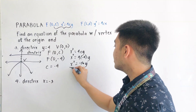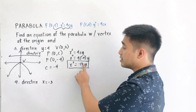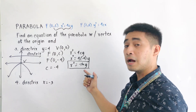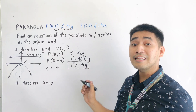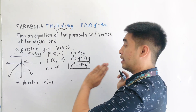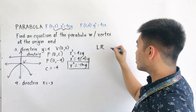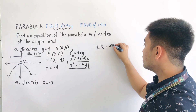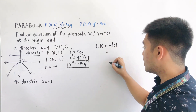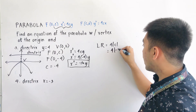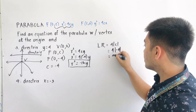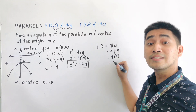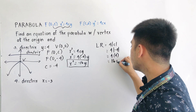Therefore, this is now the equation of the parabola. Since this is negative, it is opening downward. Always remember that if your parabola equation is negative, it either opens downward or it opens to the left. So what is the length of the latus rectum? The length of the latus rectum is 4 times the absolute value of c, which is 4 times the absolute value of negative 4, giving us 4 times 4, which equals 16 units.